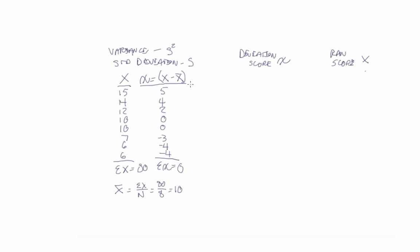What we have to do instead is have another column over here where we have the deviation scores squared. So 5 squared is 25, 4 squared is 16, 2 squared is 4, 0, 0, 9, 16, and 16. If we have the sum of the deviation scores squared, we get 86.